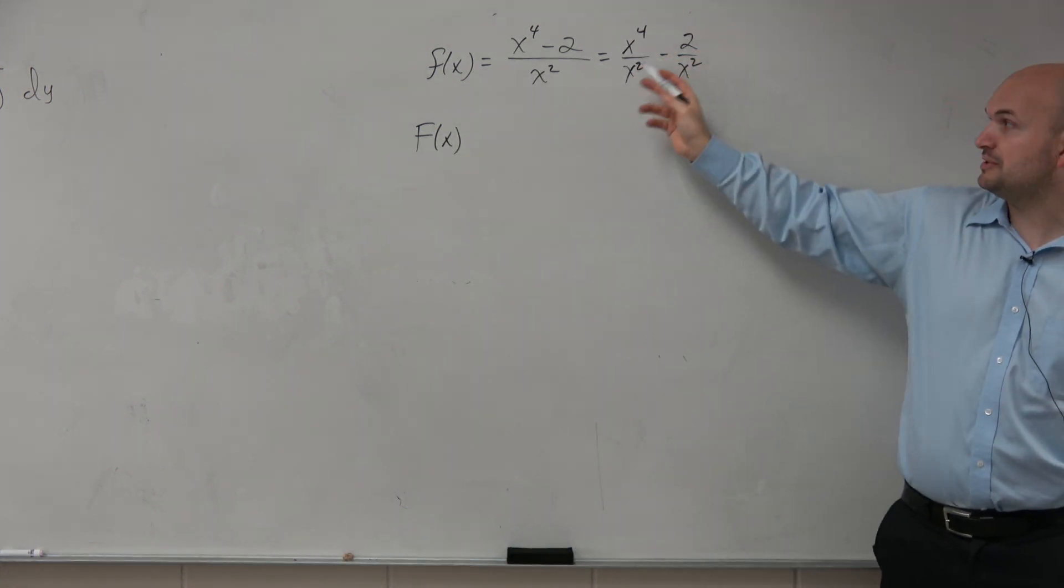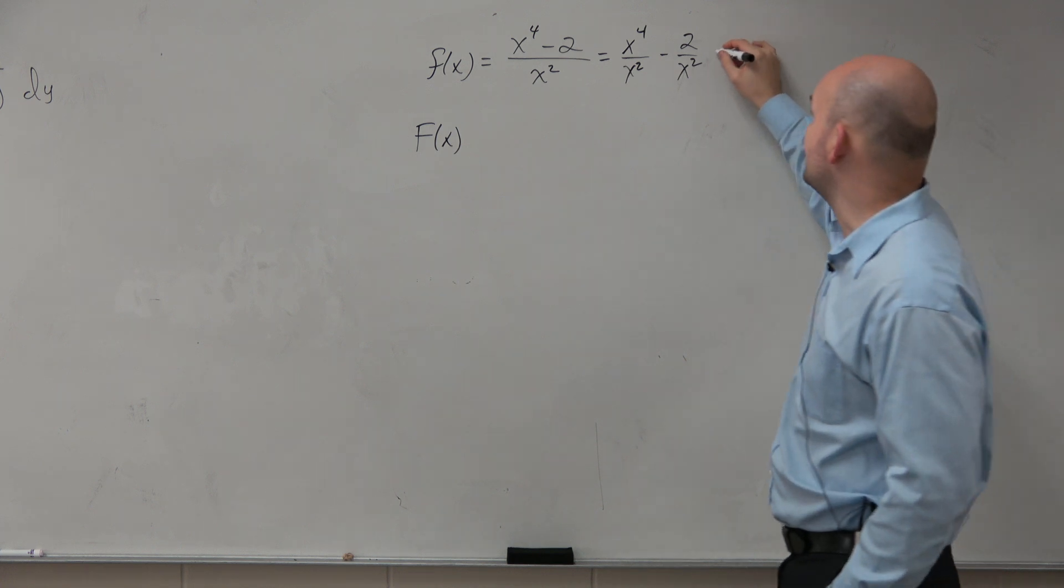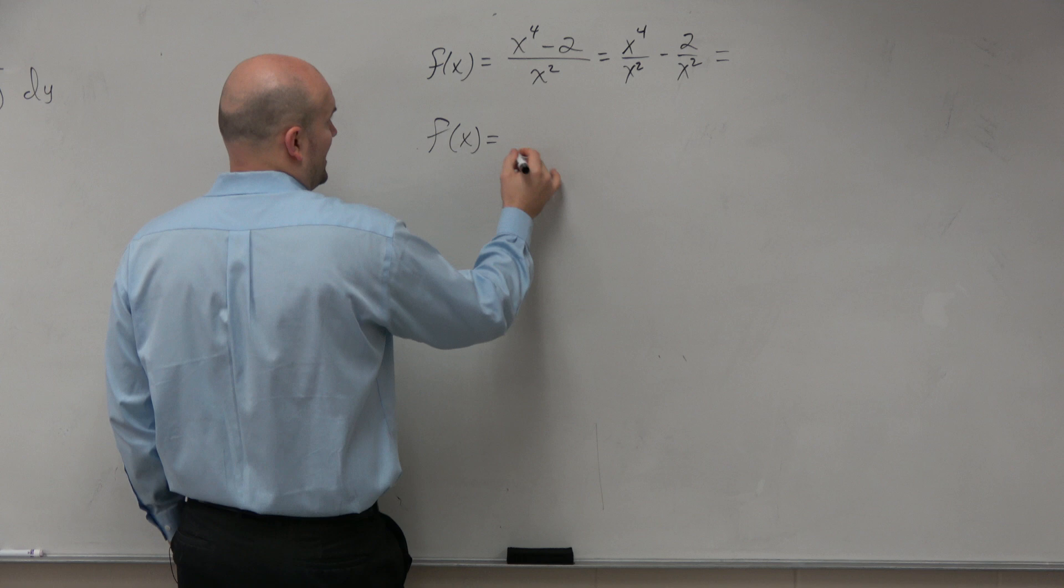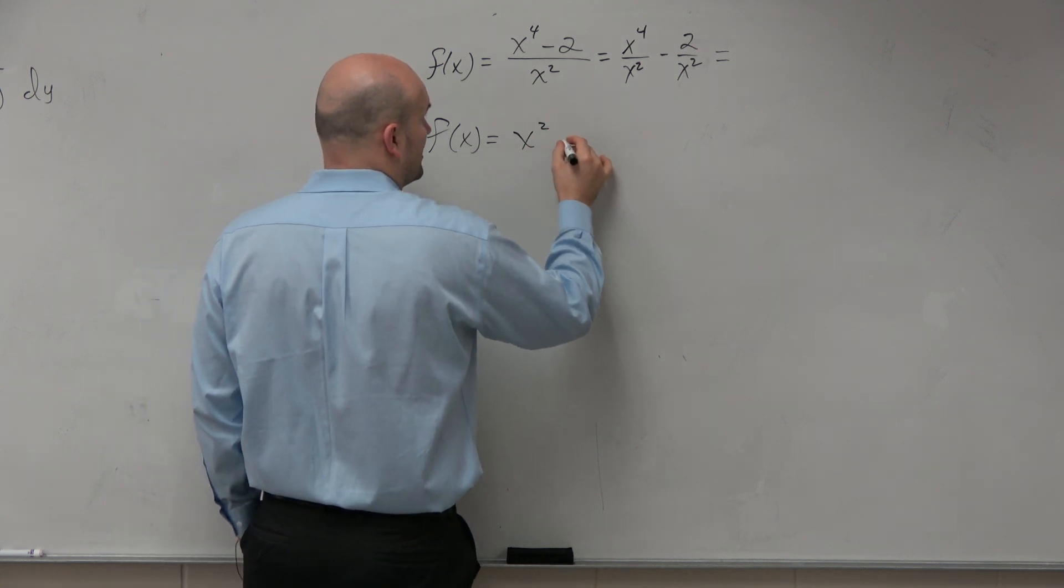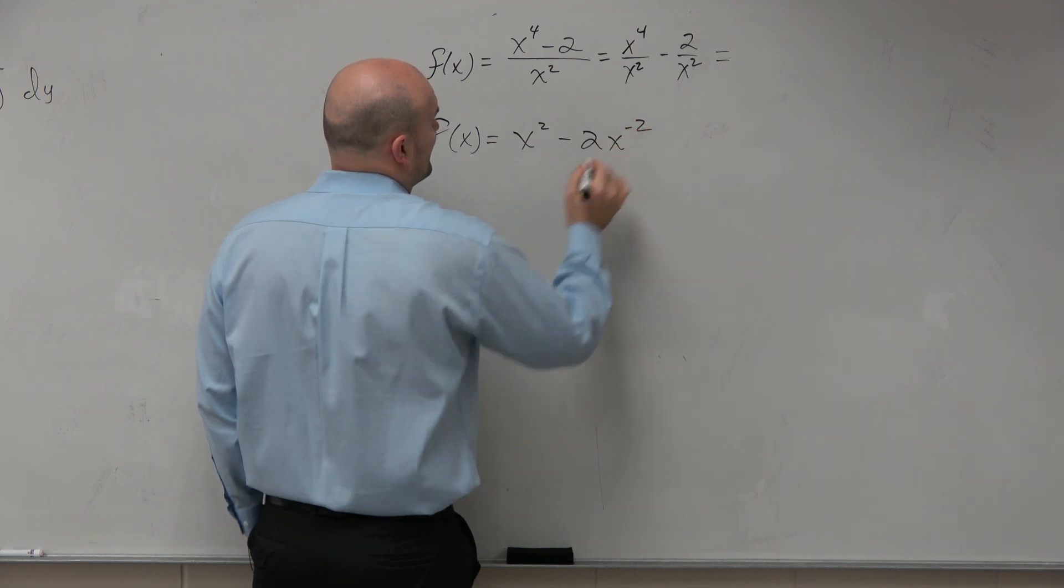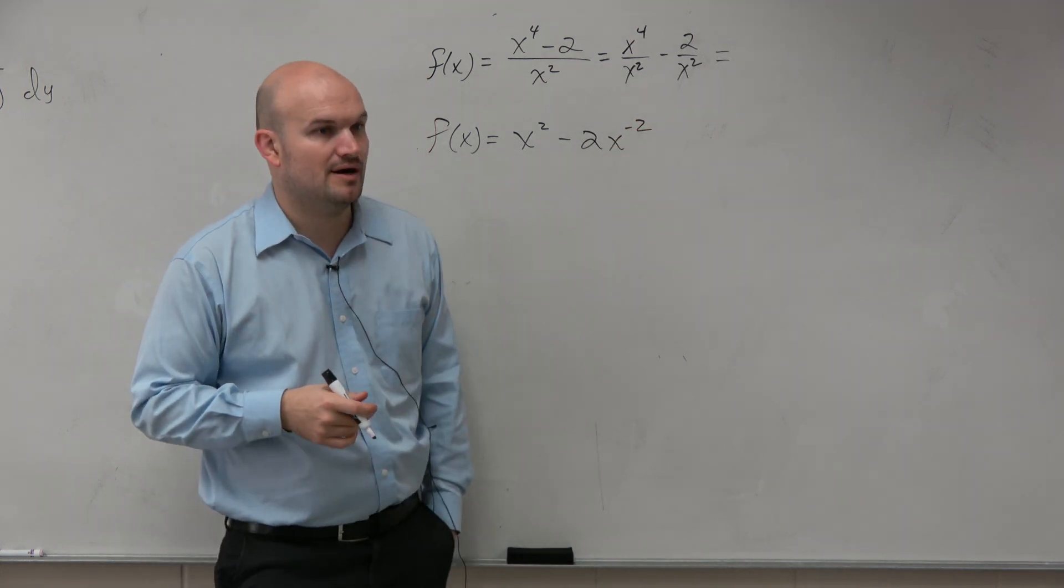So we can distribute that x squared into both of those. And when doing that, I get a simplified f of x as x squared minus 2x to the negative second power.